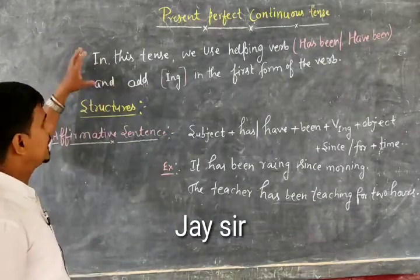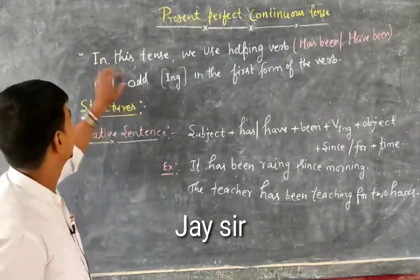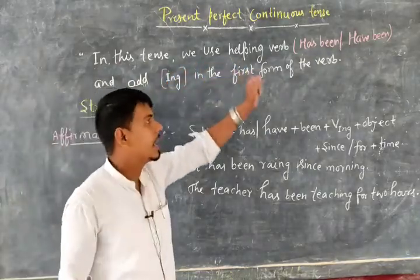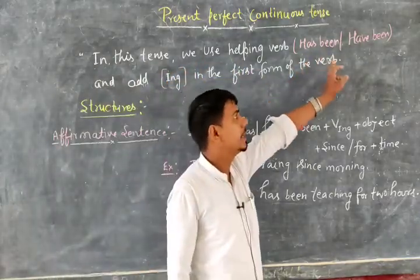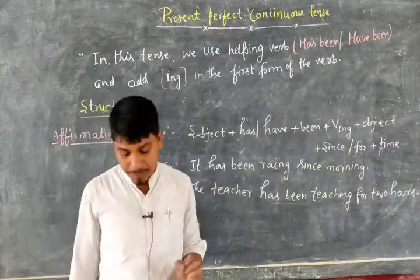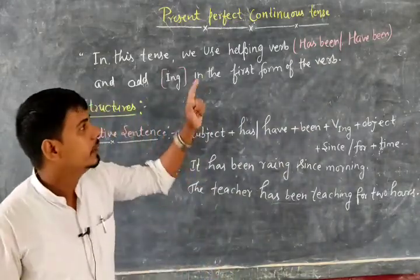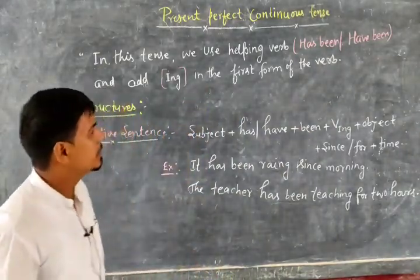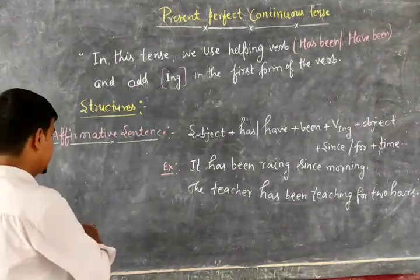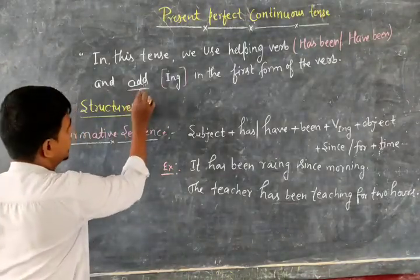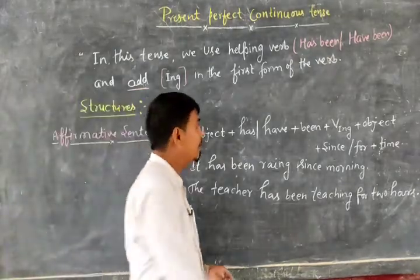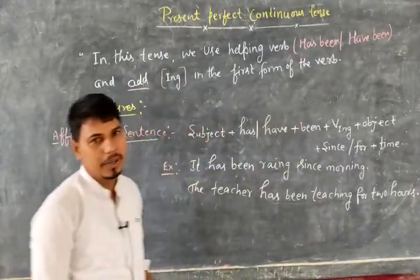Very first, we have to talk about helping verbs. In this tense, we use the helping verbs 'has been' and 'have been.' In the present perfect continuous tense, we use 'has been' and 'have been,' and we join '-ing' to the first form of the main verb.